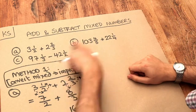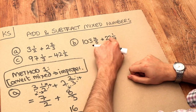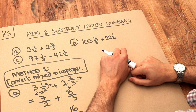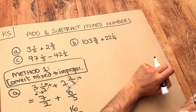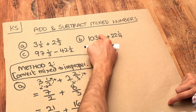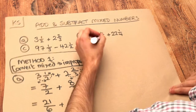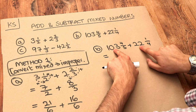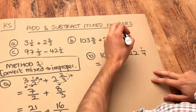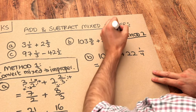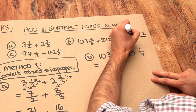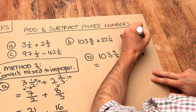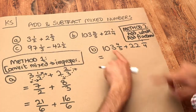Now the problem with these other two examples is that I've purposely made the whole part of each mixed number really big to make it difficult to convert them into improper fractions, because the numerator is going to be absolutely huge if I were to do 103 times five plus four. So let's try another method. What we could do here is just add the whole parts and add the fractional parts separately — this is Method 2.